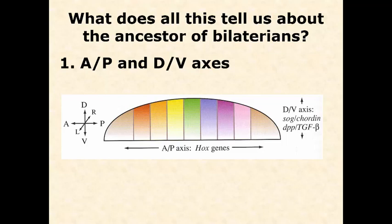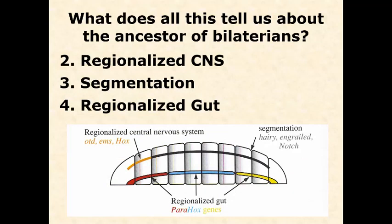A couple of major features: first, the ancestor of all bilaterians already had a very clear anterior-to-posterior axis — meaning the head was different from the tail — and a dorsal-to-ventral axis. Bilateral symmetry is of course where their name comes from, but the head, tail, and dorsal-to-ventral differentiation were very well defined early on in the bilaterian ancestor.